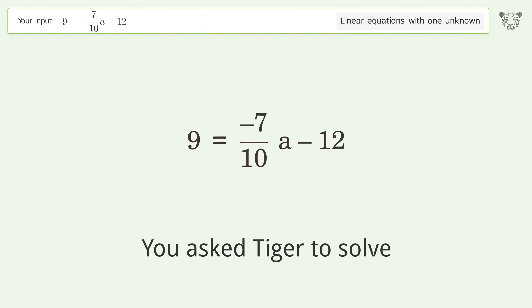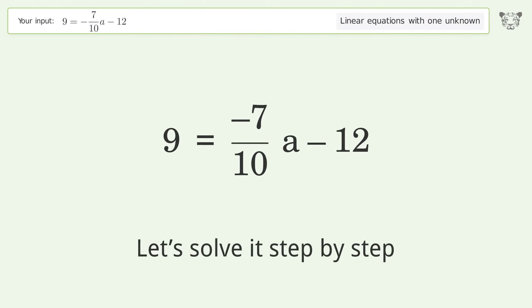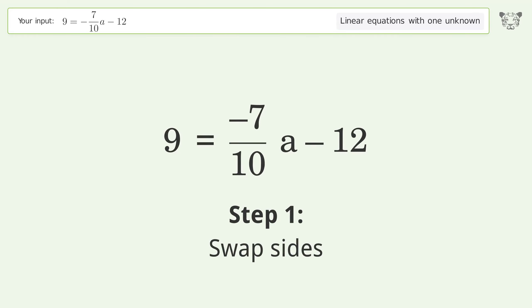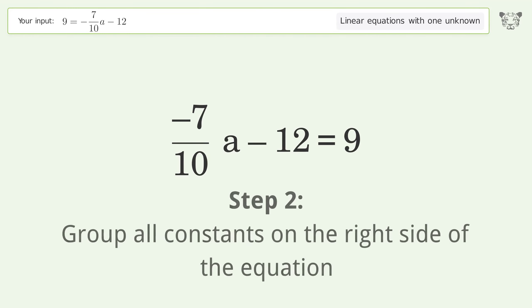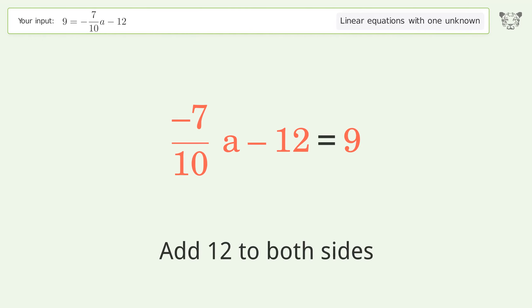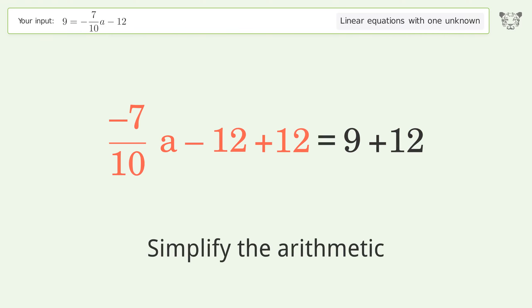You asked Tiger to solve this. It deals with linear equations with one unknown. The final result is a equals negative 30. Let's solve it step by step. Swap sides, group all constants on the right side of the equation. Add 12 to both sides. Simplify the arithmetic.